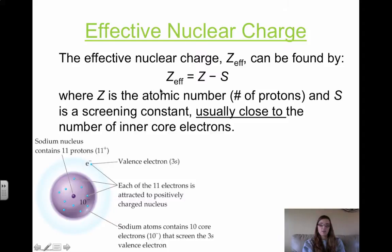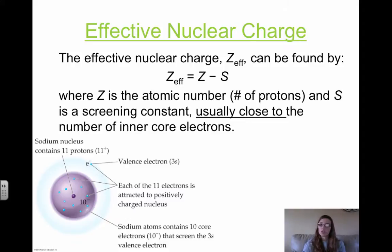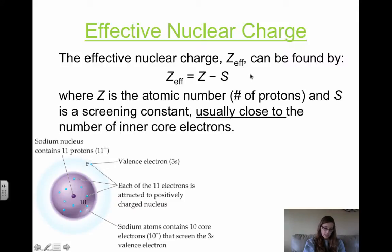Z-effective is the effective nuclear charge, Z is the atomic number which is the number of protons, and S is the screening constant. This is usually close to the number of inner core electrons, so we are just going to use core electrons — we're not going to worry about the actual value of the screening constant. To calculate effective nuclear charge, we take the number of protons (same as atomic number) minus the number of core electrons.